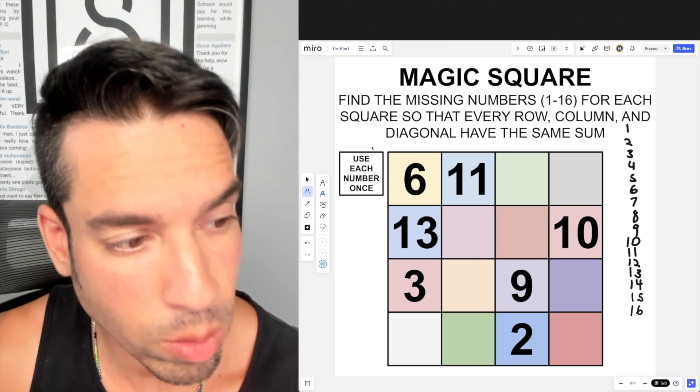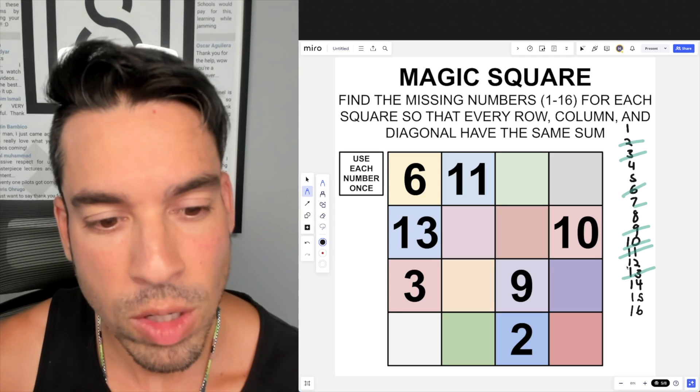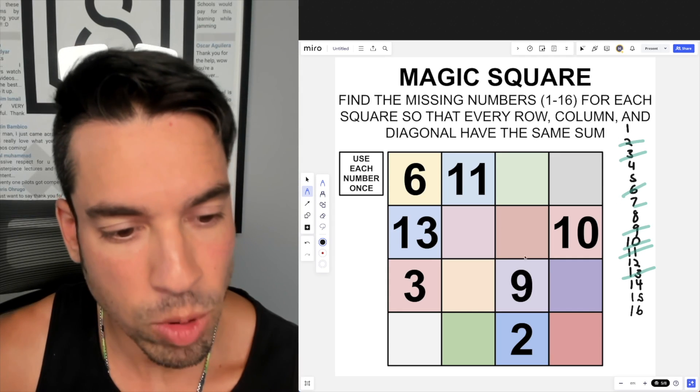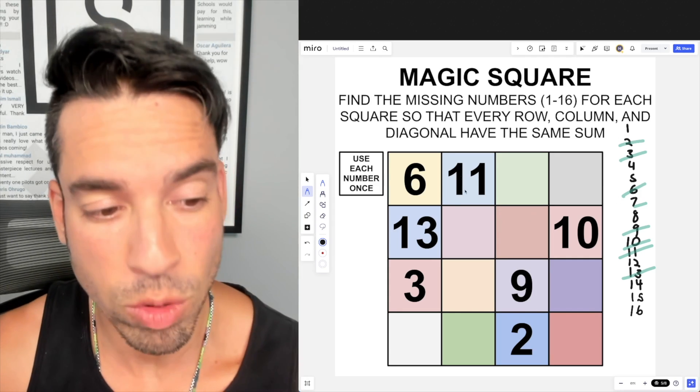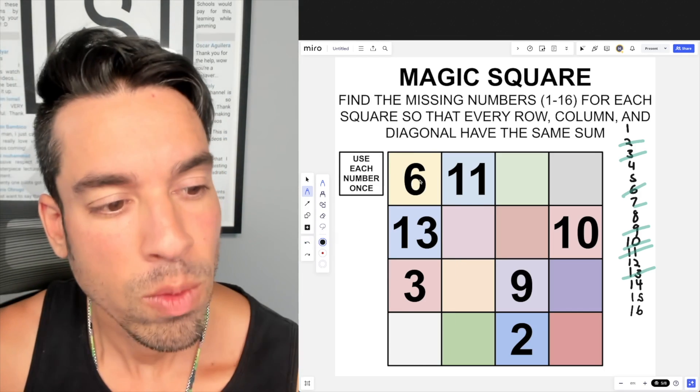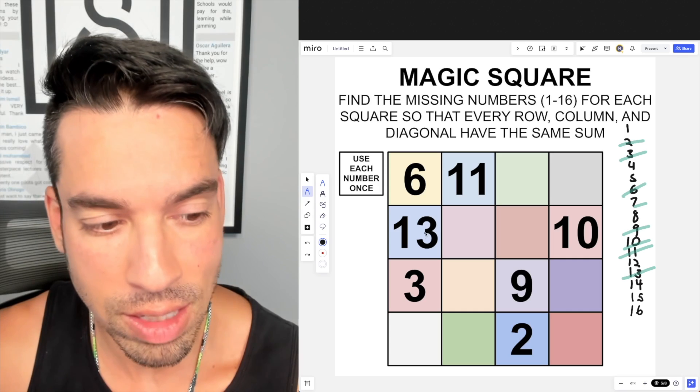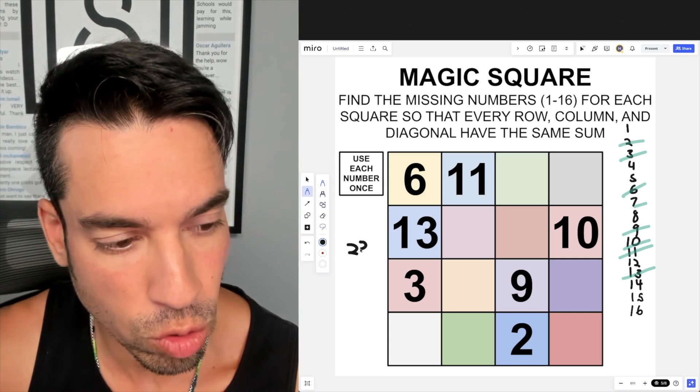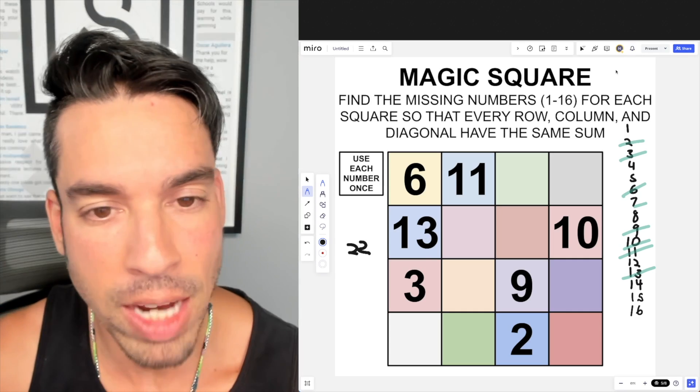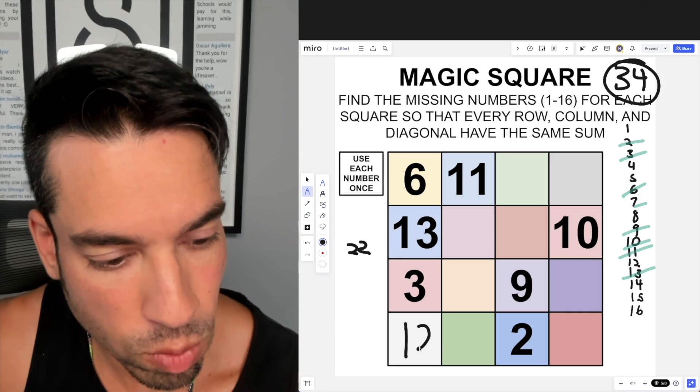So 34 is the magic number. Now since we know everything has got to add up to 34 and we're using each number only once, we can cross off the numbers that are already in here. So now we know that these numbers are off the table. Let's plug and chug and see if we can figure out what the remaining spaces should be. I like to start with this row because we have three out of four numbers. If I already know that 6 plus 13 is 19, plus 3 is 22—if we're trying to get to that magic number of 34, we need a remaining 12 right here.